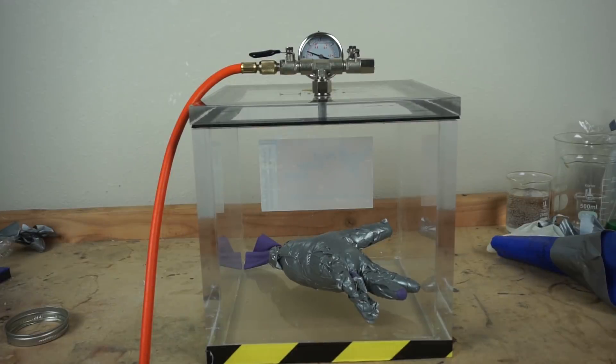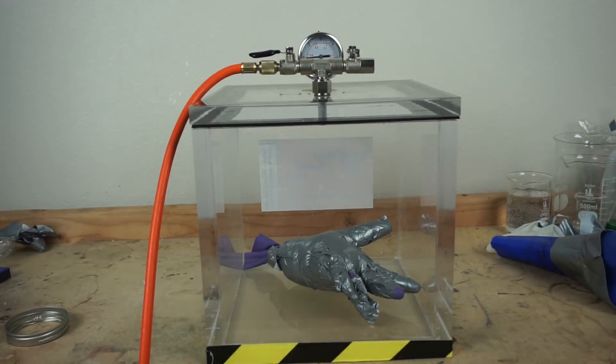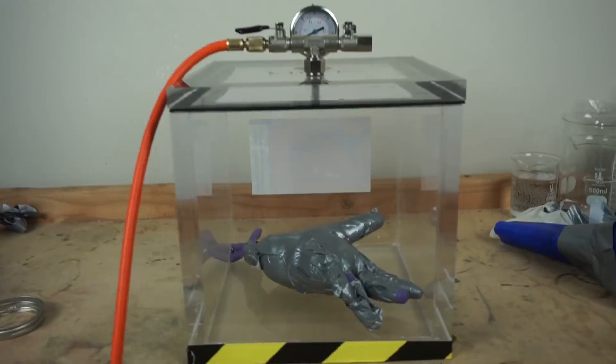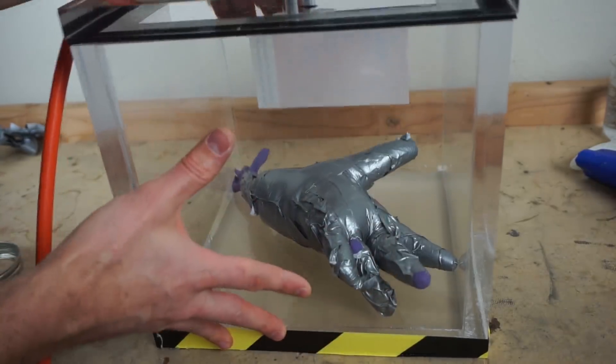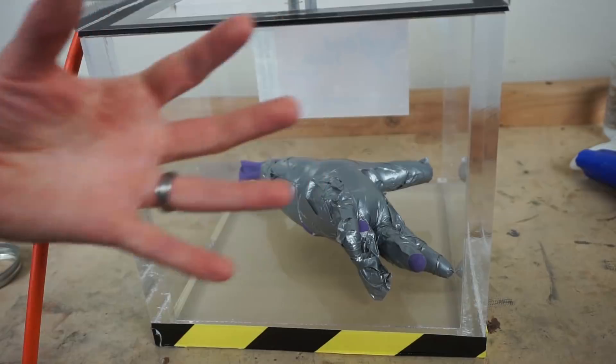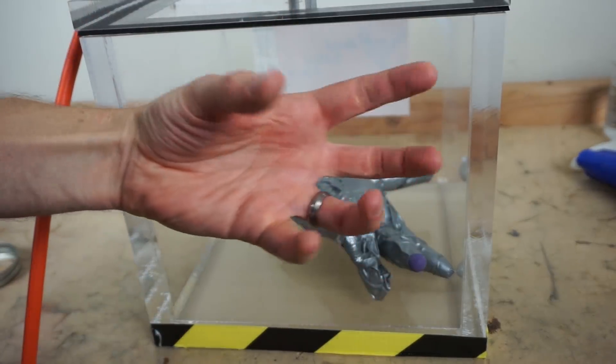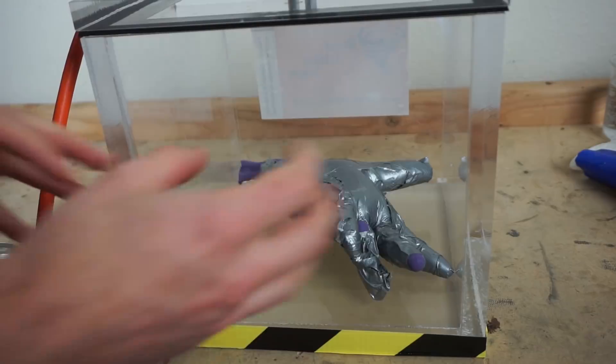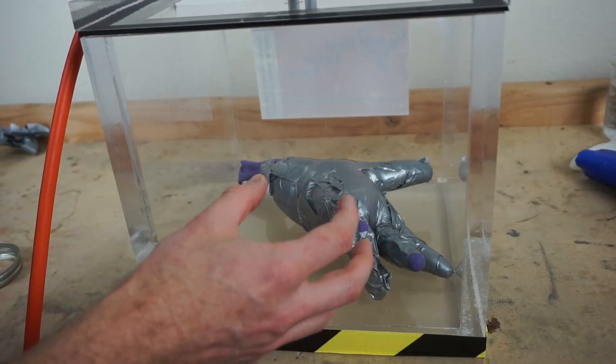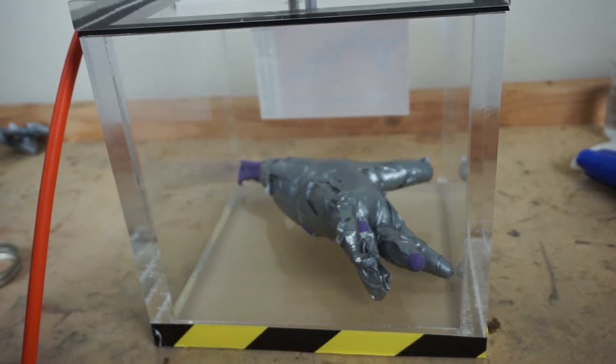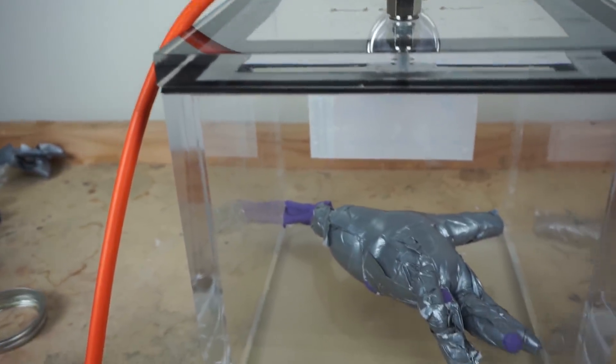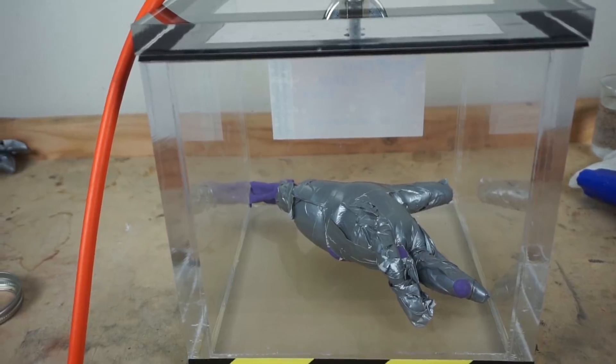We're at 0.2 atmospheres, 0.1 atmospheres, our glove's looking fine in there. We're at full vacuum now. So it looks like our duct tape held up. So if you had your hand in there right now, it would be really stiff to try to move. Basically because it's pressurized to around 14 pounds per square inch greater than the outside vacuum around it. So we're at full vacuum right now, and our duct tape glove is holding up.